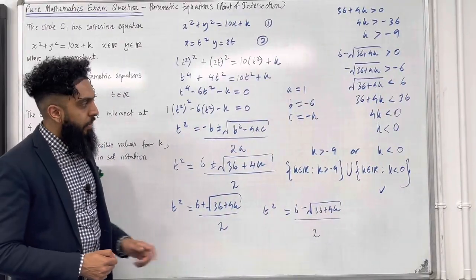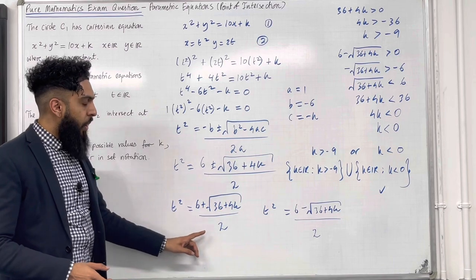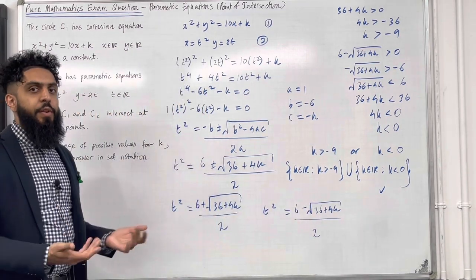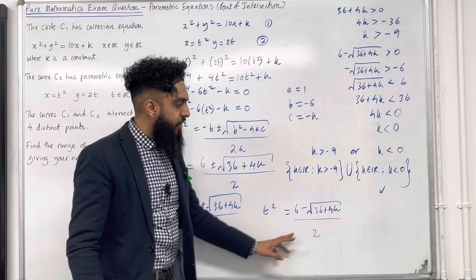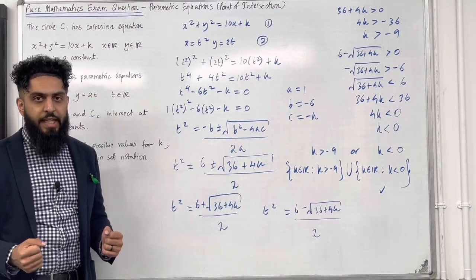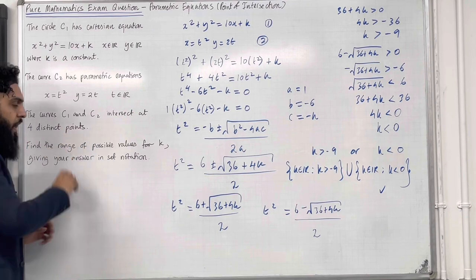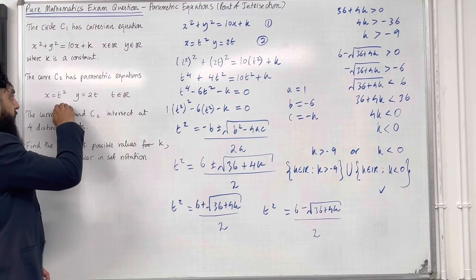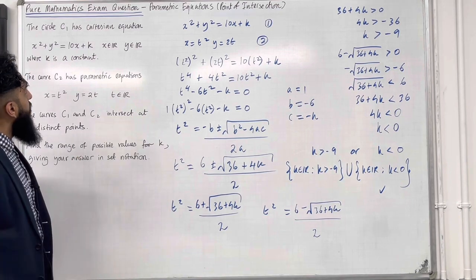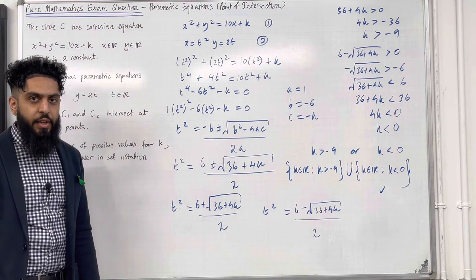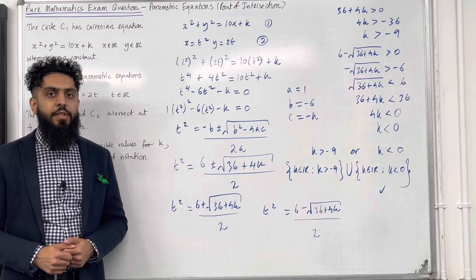Going back to the solution: provided k is greater than minus 9 and k is less than 0, this satisfies the condition that both fractions are greater than 0. If both values are greater than 0, we can take the square root of each. Taking the plus or minus square root of the first expression gives two solutions for t, and doing the same for the second expression gives another two solutions for t — four solutions in total. That's exactly the condition we need: C1 and C2 intersect at four distinct points. Substituting the four t values into the parametric equations gives four distinct points. That completes this exam question and teaching video on Pure Mathematics: Parametric Equations, Point of Intersection. If you found the video useful, please subscribe, leave a like, leave a comment, and turn on notifications.